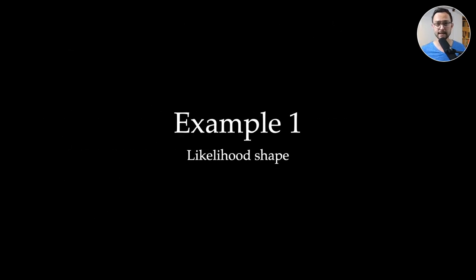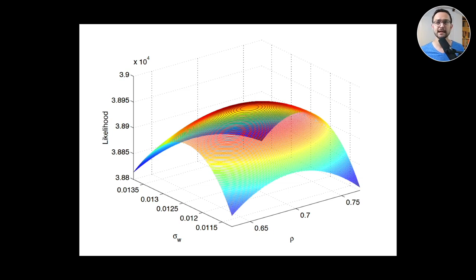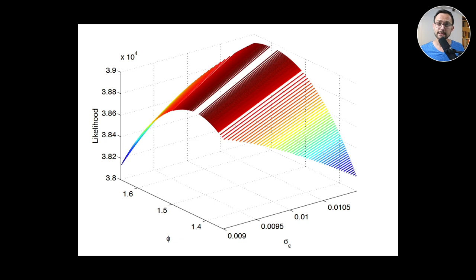Let's have a look at the shape of a likelihood. A nicely behaved likelihood shows a clear peak in rho and sigma_w, so an optimization technique will likely uncover the maximum and benefit from the nice curvature for standard error estimates. However, for two other parameters the likelihood function has no unique maximum — only a range of maxima — which creates a serious problem, especially when estimating standard errors.